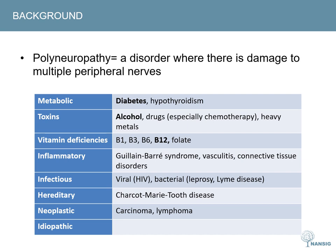The metabolic causes include diabetes and hypothyroidism. Toxins include alcohol, drugs — especially many chemotherapy agents — and heavy metals such as lead. Vitamin deficiencies tie in with alcohol, as that often comes hand in hand with vitamin B deficiency. Inflammatory causes include Guillain-Barré syndrome, as well as infectious causes, hereditary causes such as Charcot-Marie-Tooth, and finally neoplastic processes can also cause polyneuropathy.